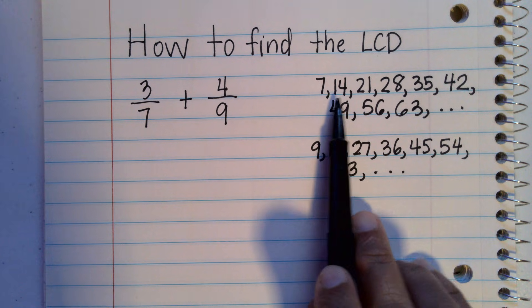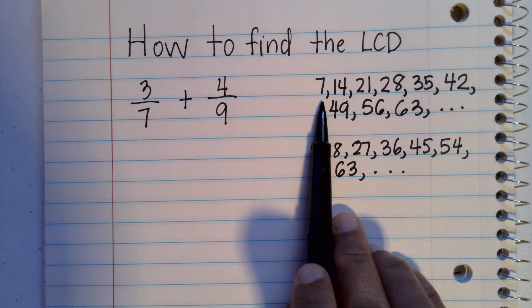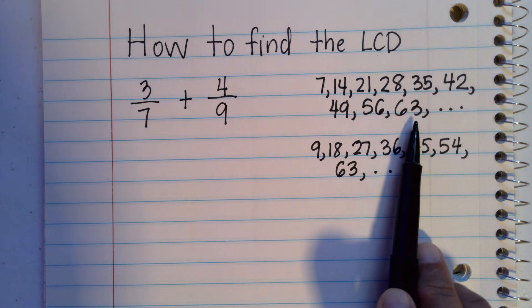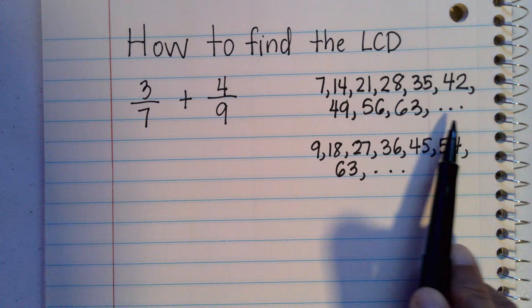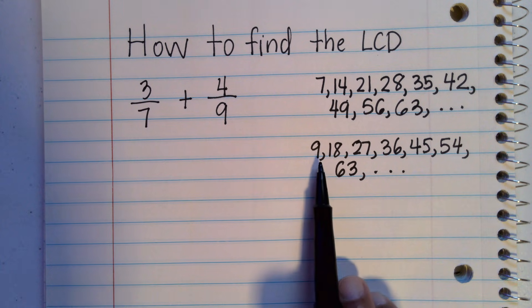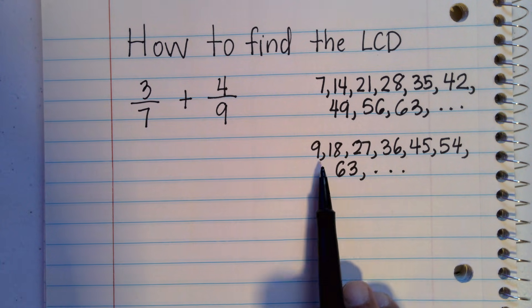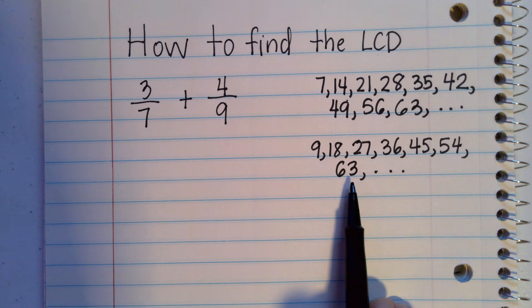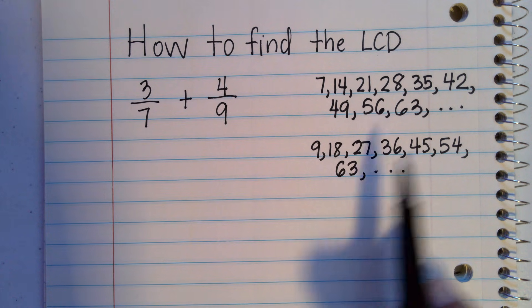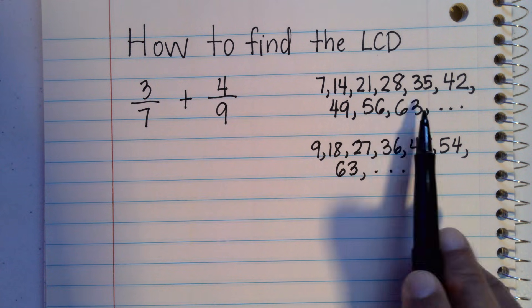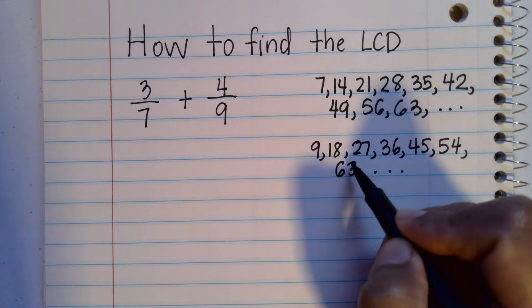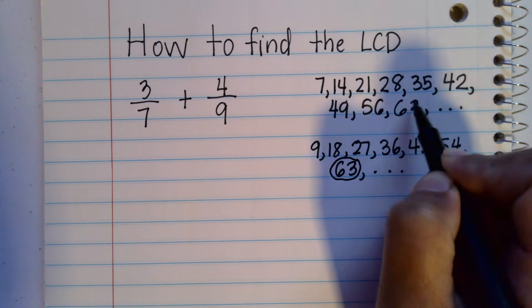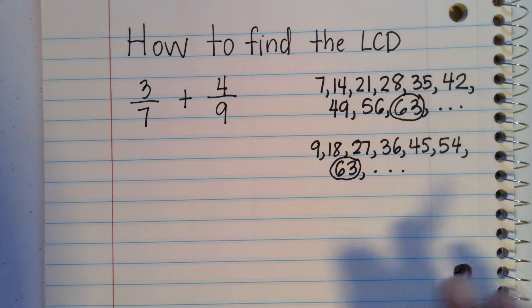So these are some of the multiples of seven. I only went to 63, but there are more multiples, and these are some of the multiples of nine. And I stopped at 63 also because I can see that 63 is common to both of them. So that means the least common denominator is 63.